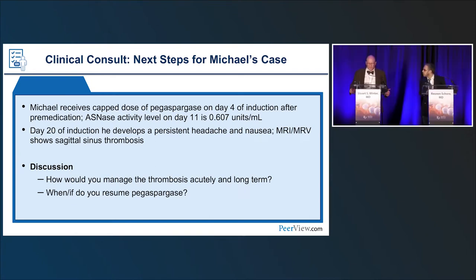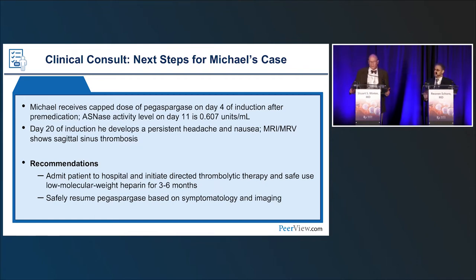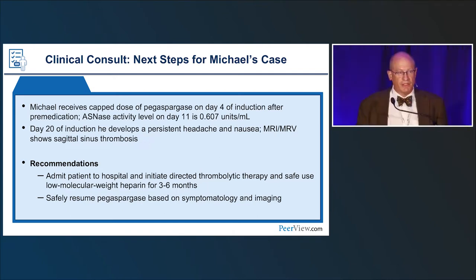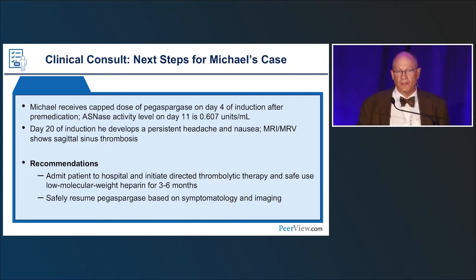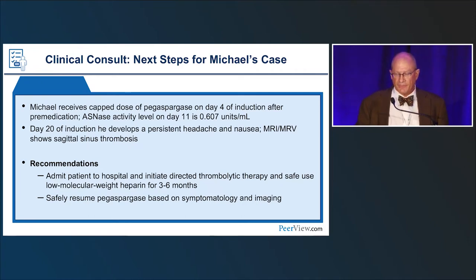At Children's Minnesota, we would attempt to reverse the clot with TPA and then start low molecular weight heparin — in our experience that usually works pretty well. We generally restart asparaginase and have intermittently used low molecular weight heparin during subsequent courses to prevent recurrence, typically for three to six months. At Children's National, we similarly consider directed thrombolytic therapy followed by low molecular weight heparin, continuing for at least six months and covering the patient prophylactically, if not therapeutically, during future pegasparaginase doses and for a couple of weeks thereafter.